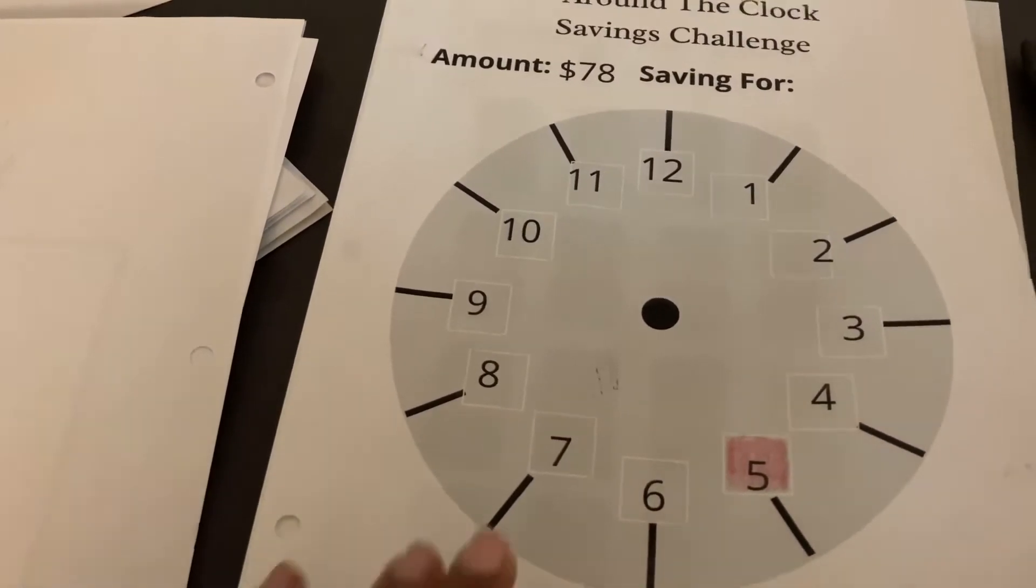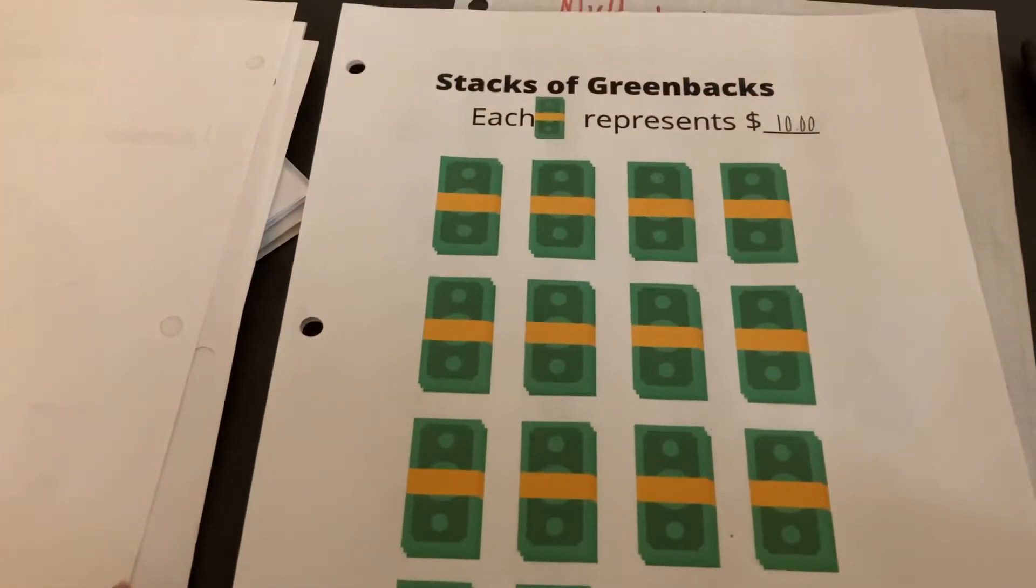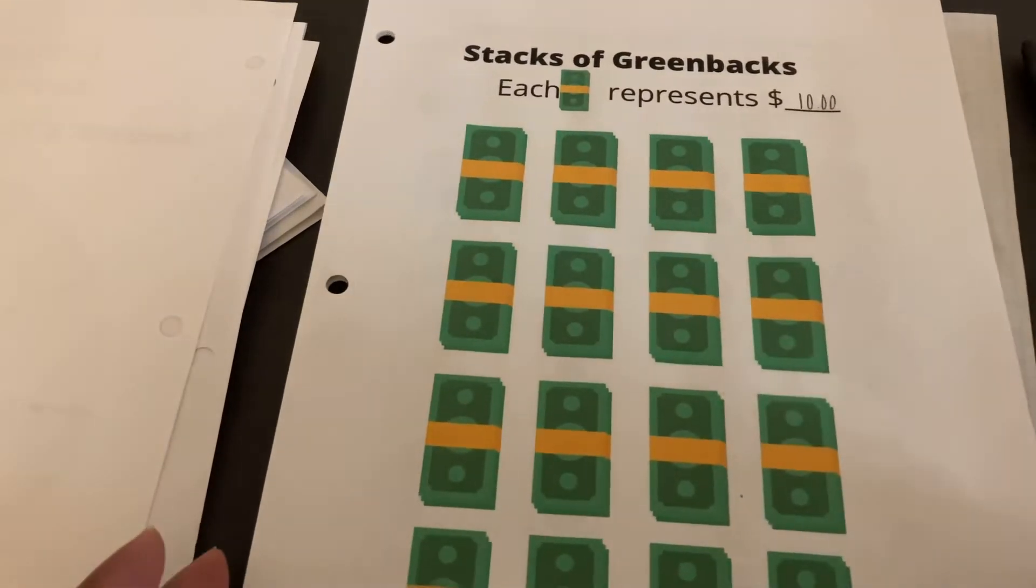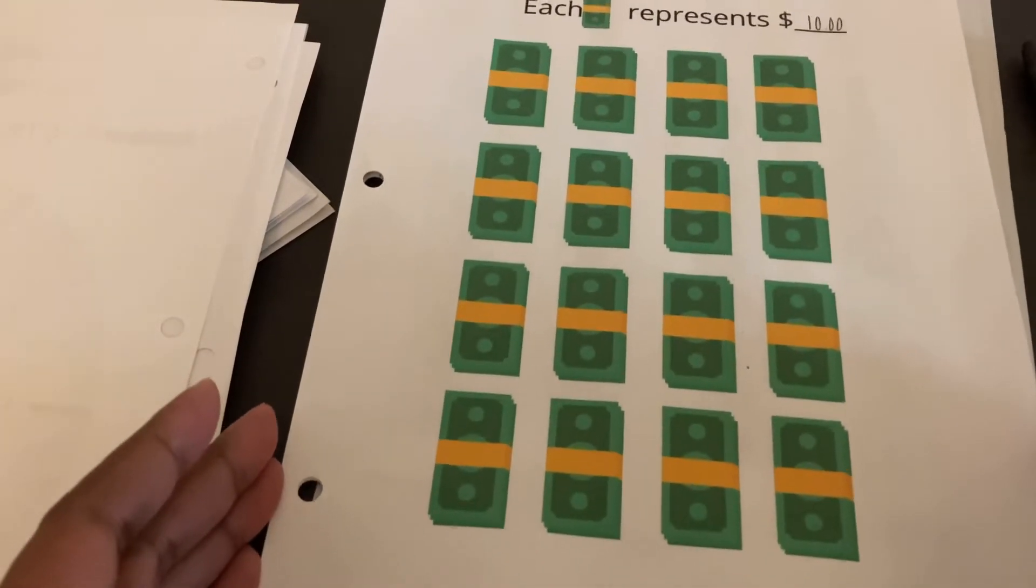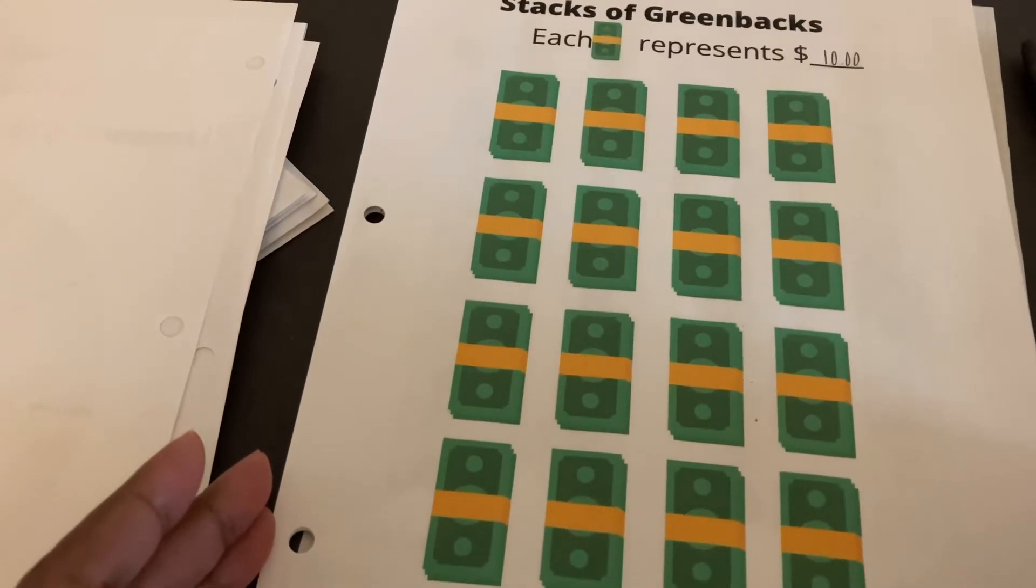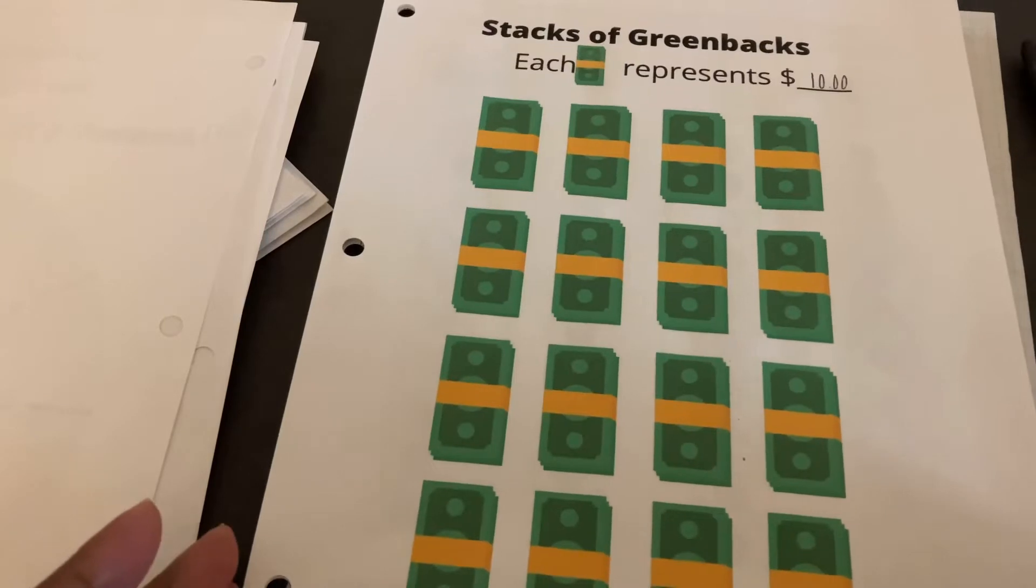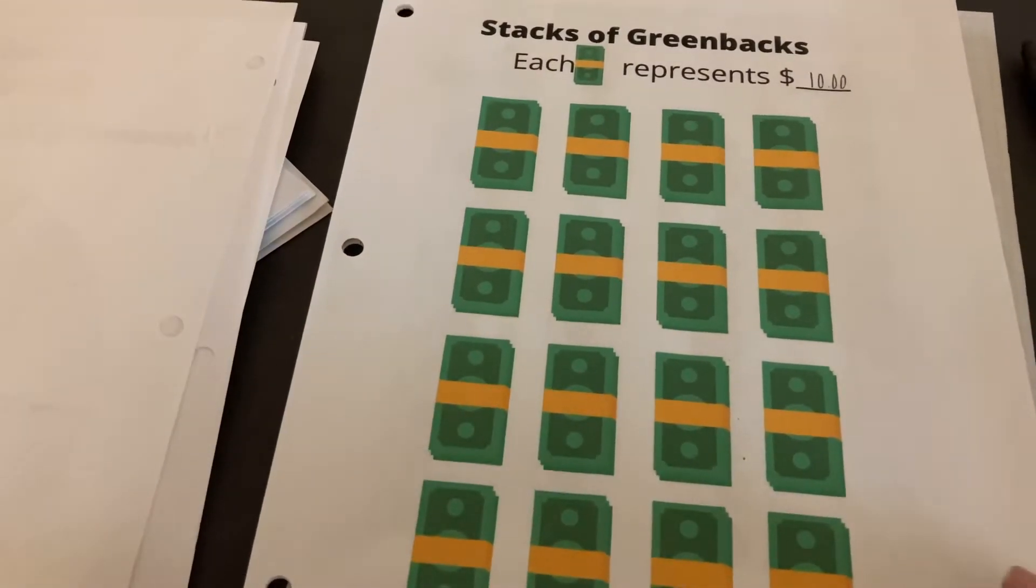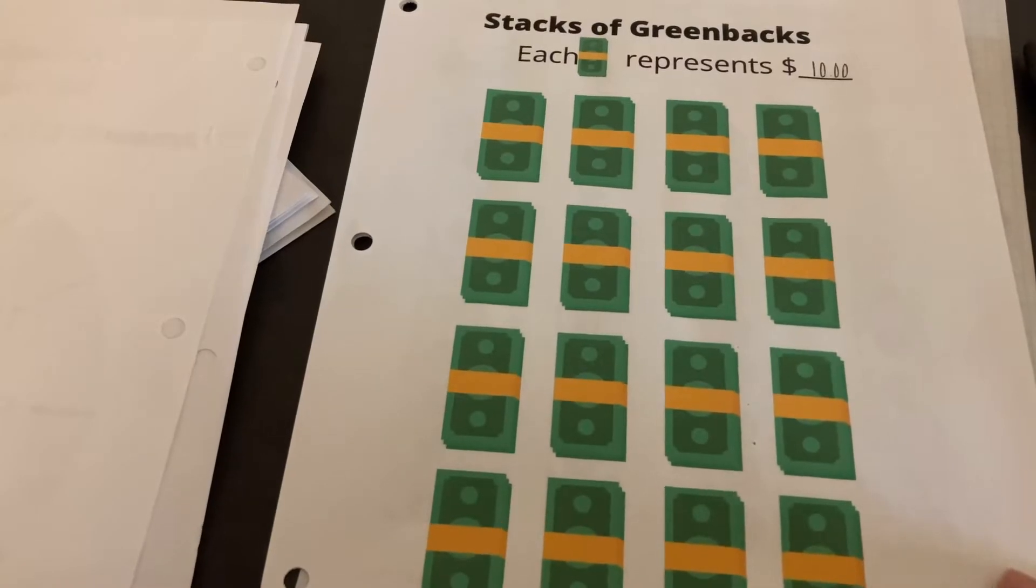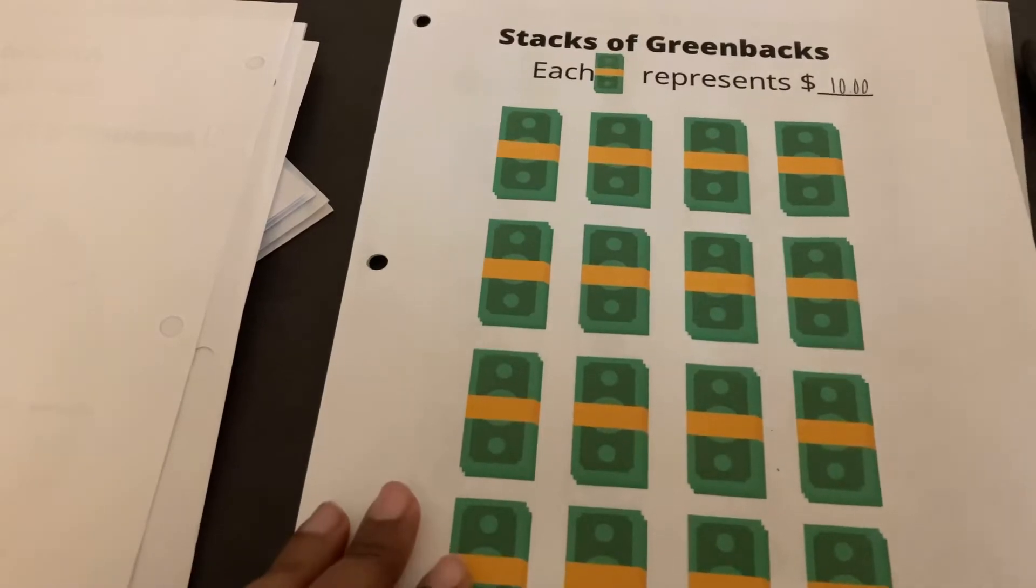Now this one I also created is called Stacks of Greenbacks, and each of these stacks will represent $10. So I do have, looks like, 16 stacks here. So 16 times 10, so this will be $160. I don't have anything allocated once I finish this challenge, but I'm sure I'll find something to do with the money that I save from doing this challenge.